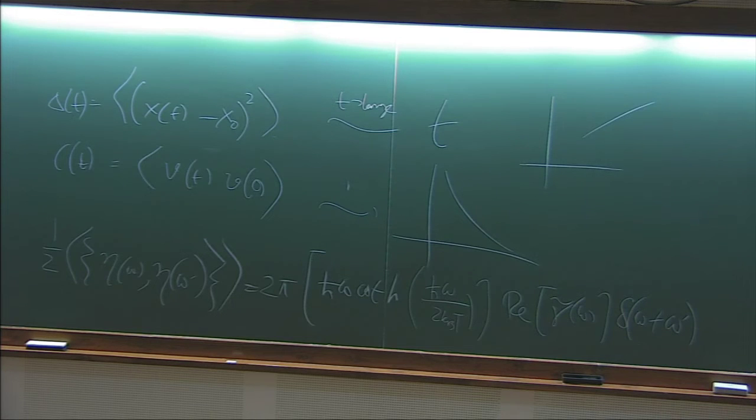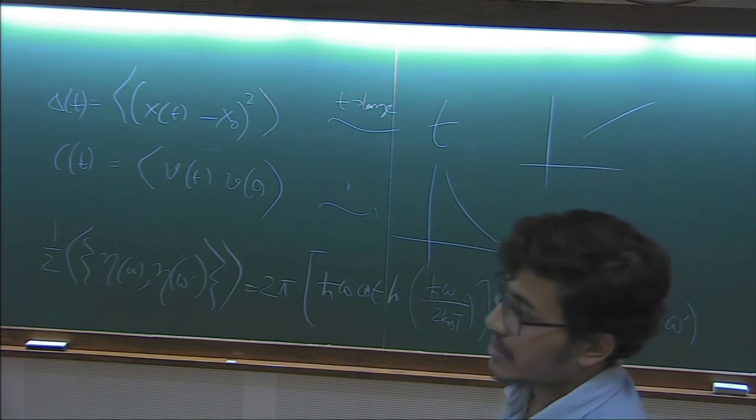And you can get that formula back if you put that high temperature limit, because cot hyperbolic will behave as 1 by x. And this h bar omega, h bar omega cancel, and you'll get that relation. So question is, everything is good. So how to, these are all phenomenological up to this point. So how to come up with a model? How to come up with a Hamiltonian which will give us all these things?